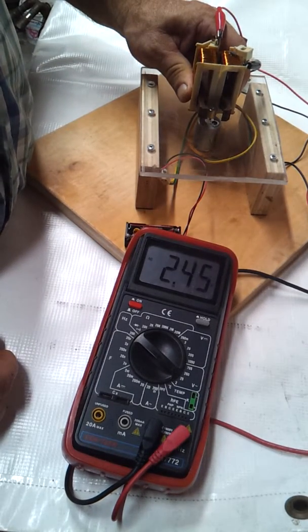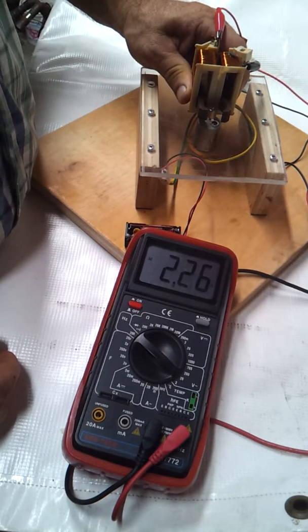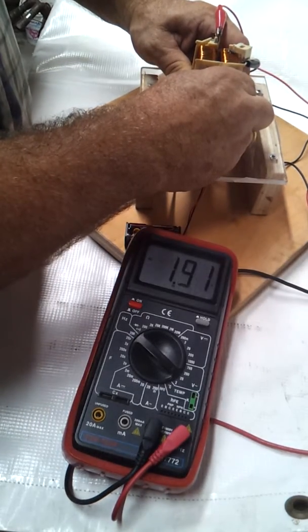If I put it right in the center there, it gets about 2.4, 2.5. I can get it higher or lower depending on how fast the magnet spins.